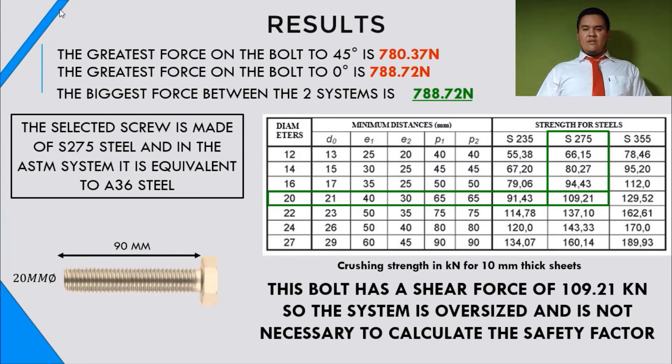Finally, we need to select the biggest force that is in both systems. So this force is 788.72 newtons. Based on this force, we need to select our commercial bolt in one table. The bolt selected is of S265 steel and the ASTM system is A36 steel. So we can see in the table, we have some bolts.